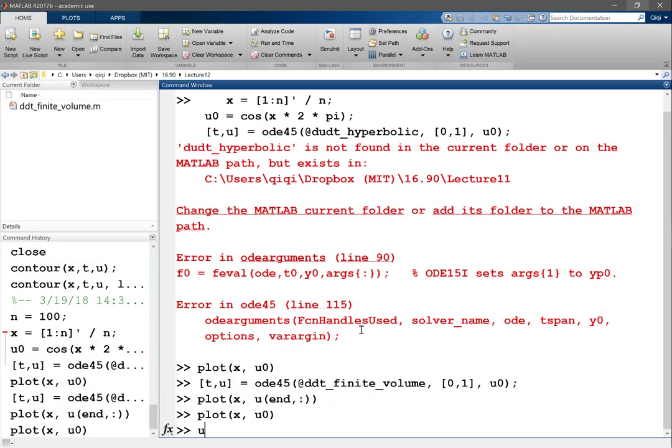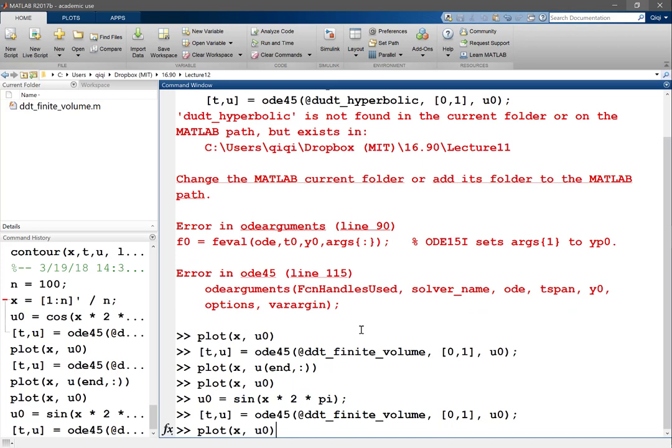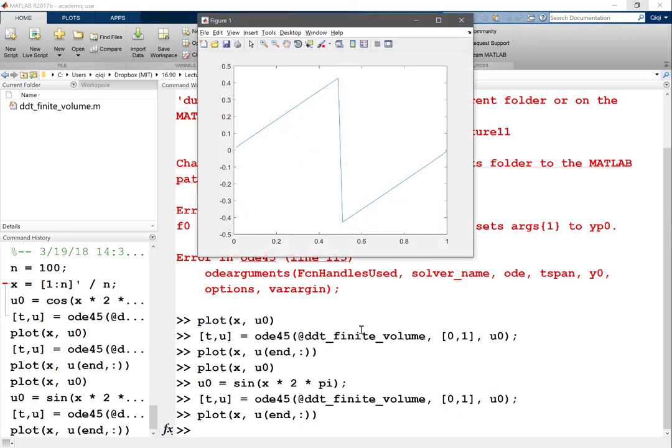Maybe I think a good idea is to start with the sine function and solve this again and plot the X. Here we can see that the solution develops a discontinuity and the discontinuity stays there without blowing up.